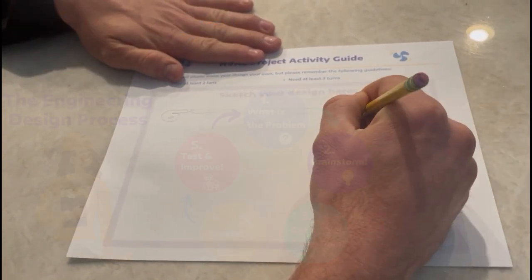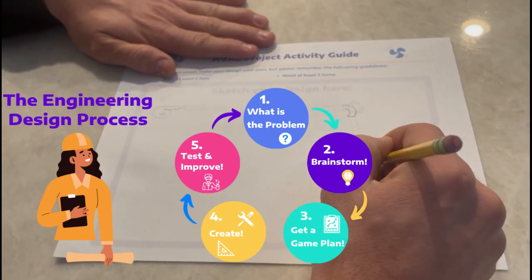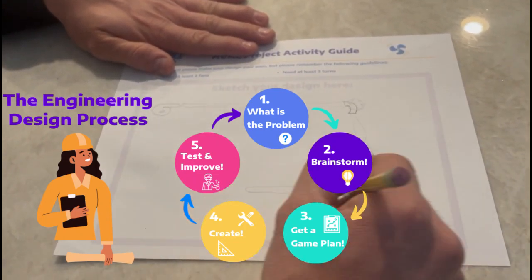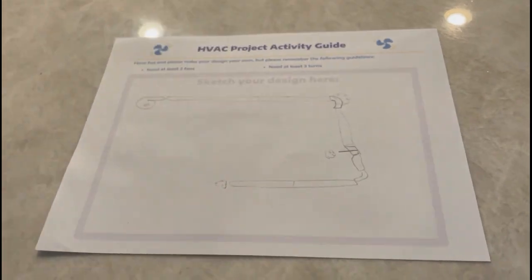This is a key step in any design process for the real world. Engineers and technicians always put their ideas down on paper so they can think through the different variables before building it in real life.